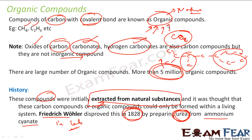This is called an organic compound because of its history — earlier it was assumed that all organic compounds are extracted from natural substances, which is why the name was coined. This definition is no longer true; it was true before 1828. The name was coined at that time and we still use it. And please note: oxides of carbon, carbonates, and hydrogen carbonates are not organic compounds.